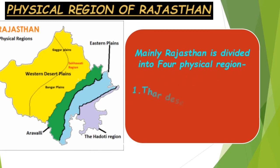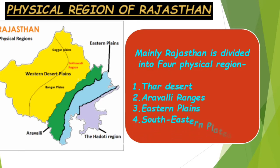Looking at the map, the part in yellow is the Thar Desert, the part in green color is the Aravalli Mountain Range, the part in light blue color is the Eastern Plain, and the part in gray color is the Hadoti region. These four parts cover the physical regions of Rajasthan.